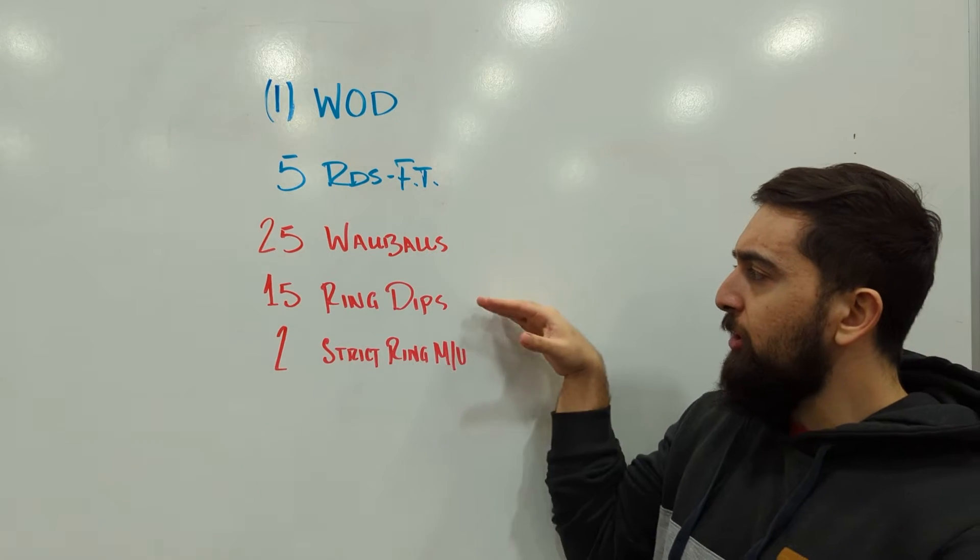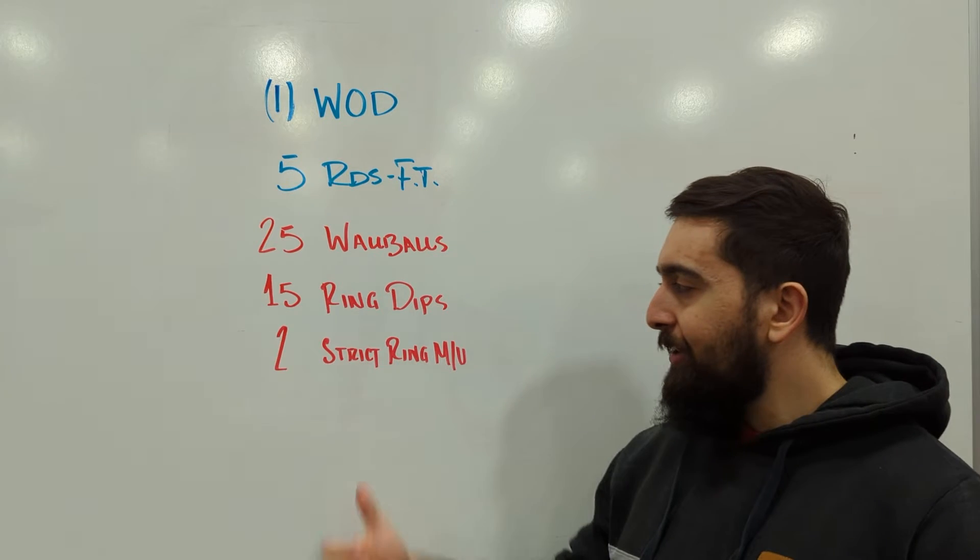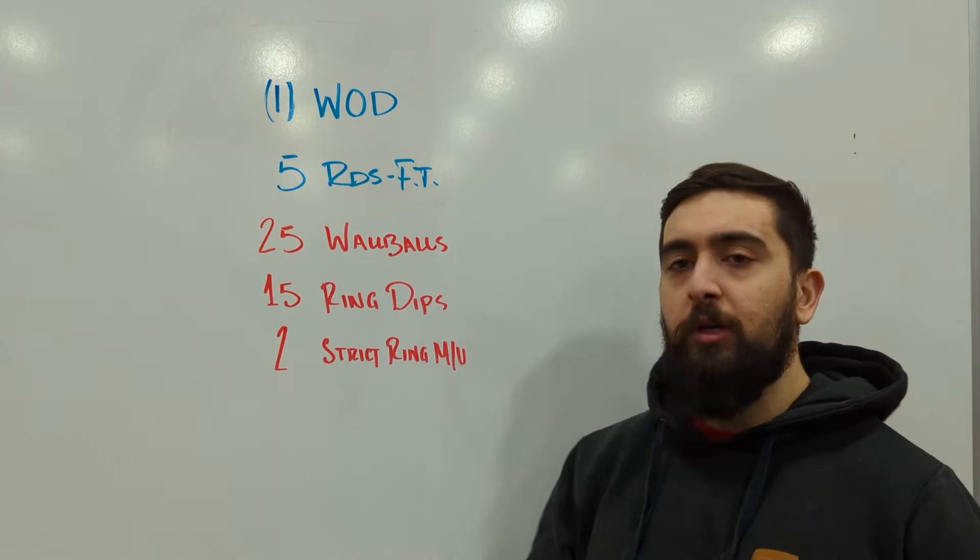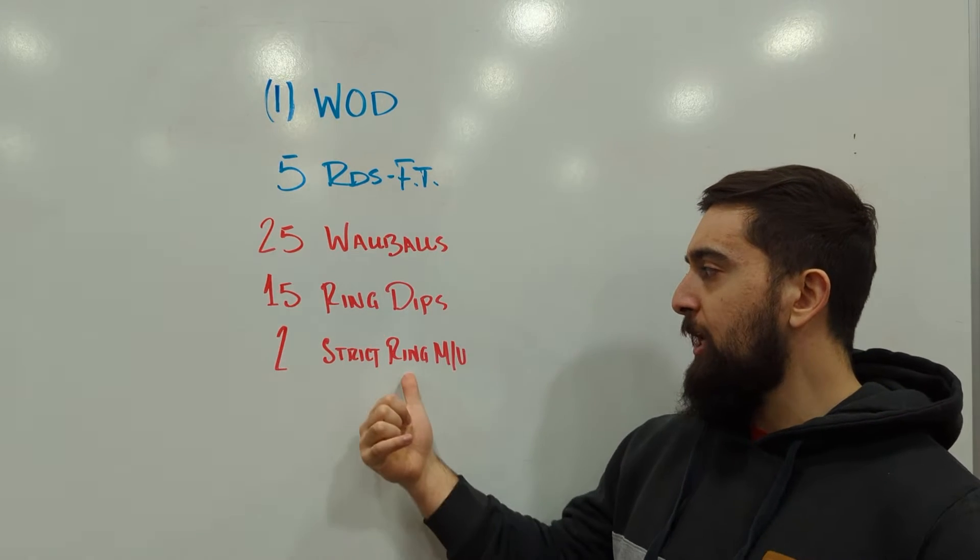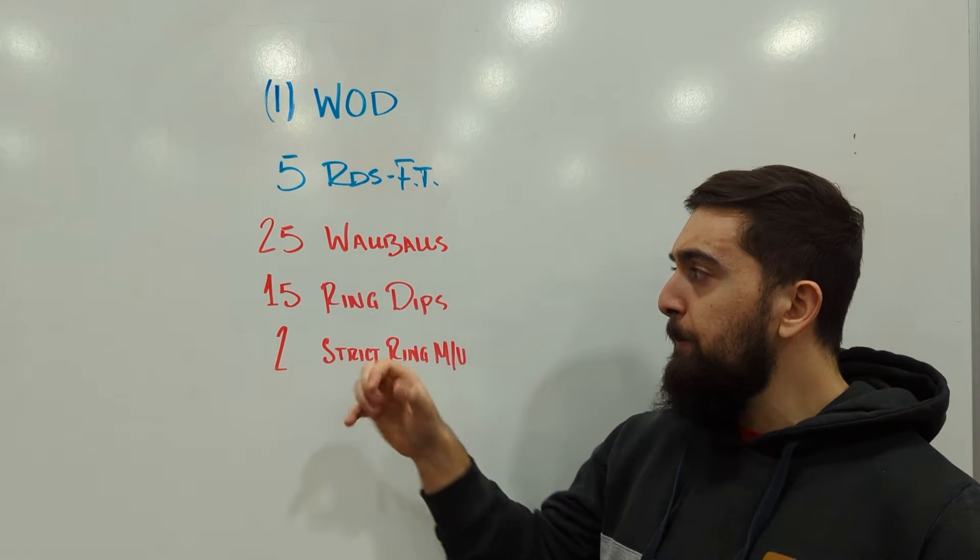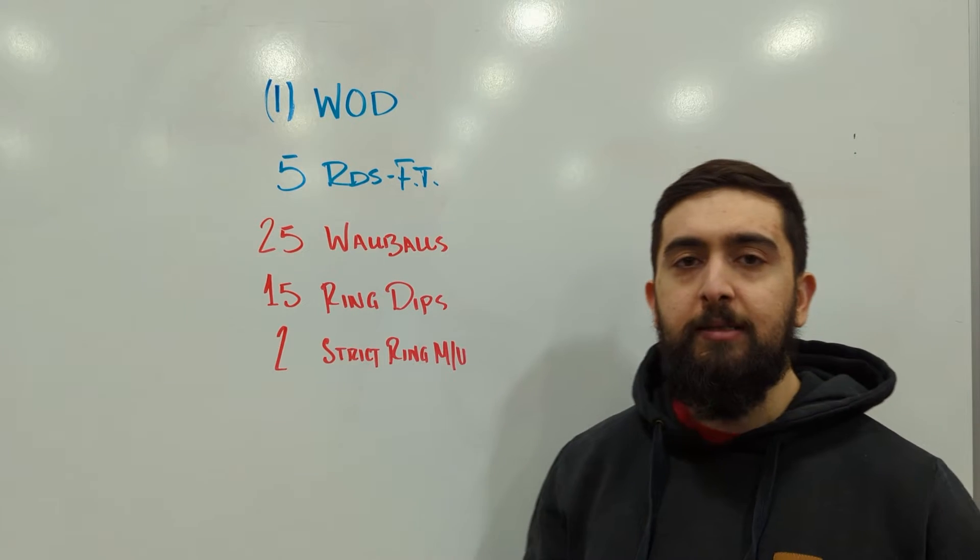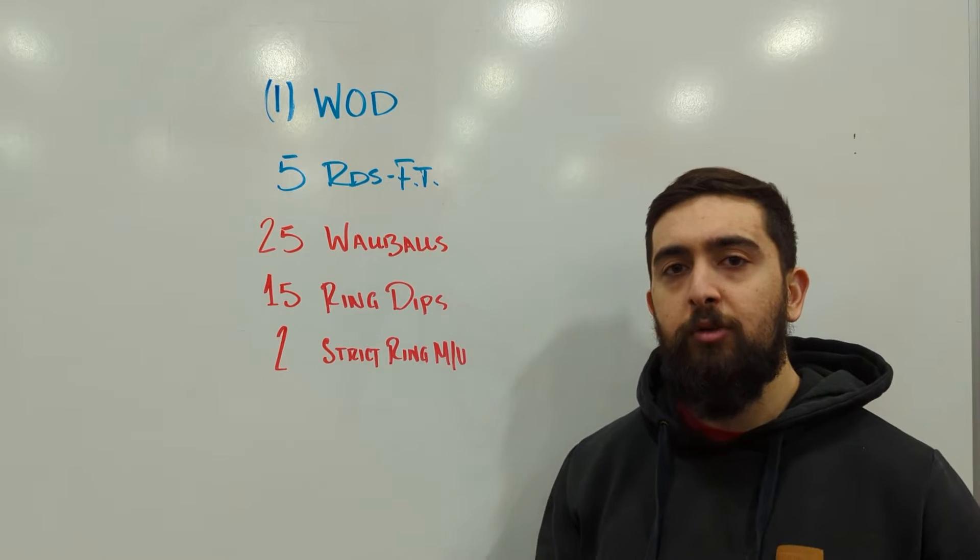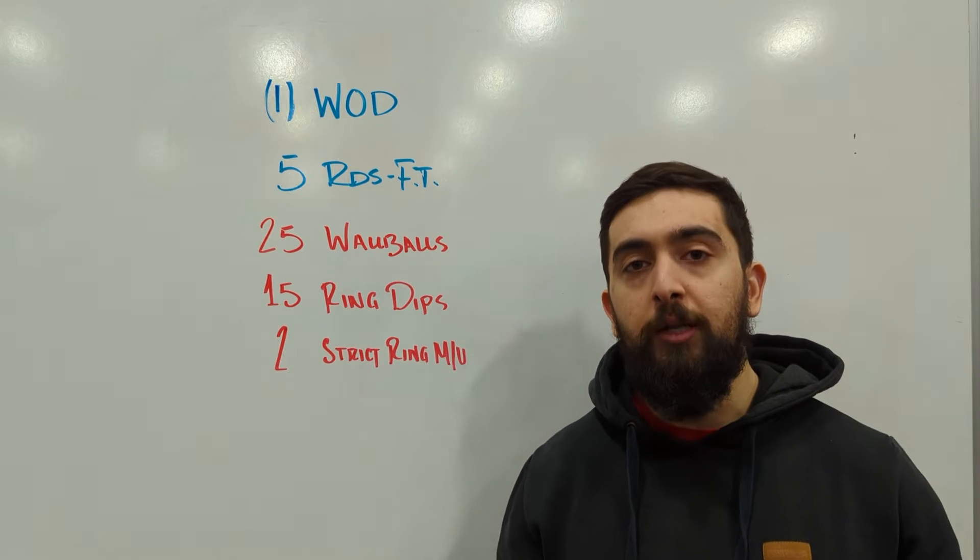So to switch our focus here with the ring dips, really working on that press, and then with the strict ring muscle-ups we're gonna be more challenged with that pull. So in terms of progression, since we got kind of that ring dip in both of them, focus on your ring dips here for your strict ring muscle-up. If you don't have that strict ring muscle-up, try to focus on a progression that will challenge your pulling strength.